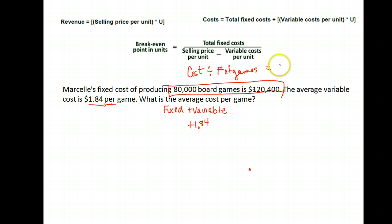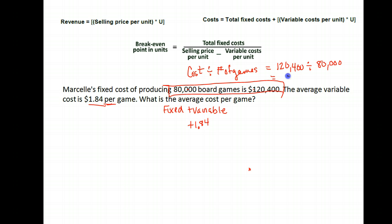We take one hundred and twenty thousand four hundred and divide it by eighty thousand. When we do that we get one point five zero five — rounded to the nearest cent, that's one dollar and fifty-one cents. So the fixed cost per game is one dollar fifty-one. The variable cost per game is one dollar eighty-four. To get the total cost per game we add those together and we get three dollars and thirty-five cents.